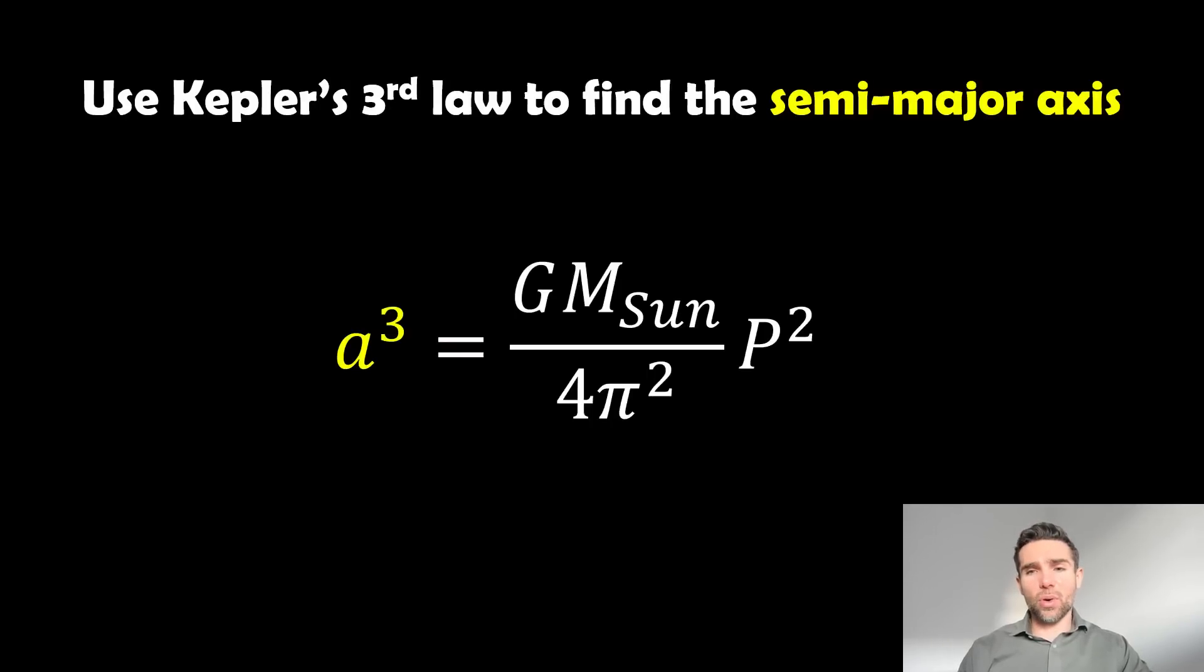We can use Kepler's third law to find the semi-major axis which is A. On the right hand side you've got the gravitational constant, the mass of the Sun, and p which is the orbital period of Earth, and that's divided by 4 pi squared. We would assume at this point we have the mass of the Sun from some other method. If not, we'd have to calculate that as well.